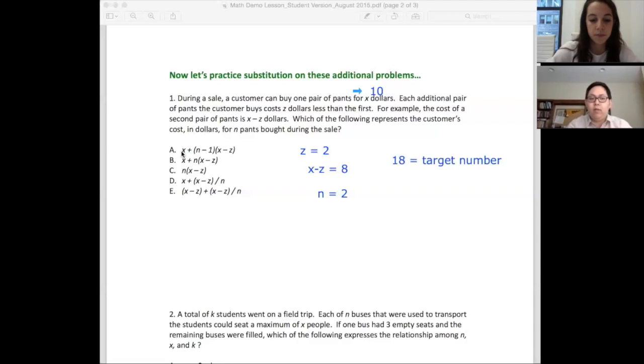Let's just try out A, the first one. So x we had 10: 10 plus (n minus 1). We had only 2 pairs of pants, so n was 2, and so it's 2 minus 1. Let's see if we can just do this out here below. So 10 plus...